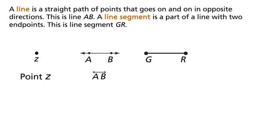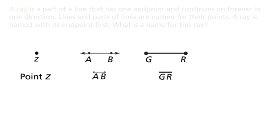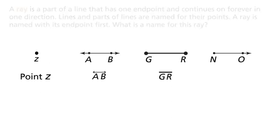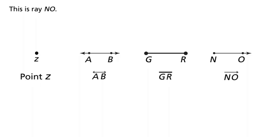A line segment is a part of a line with two endpoints. This is line segment GR. A ray is a part of a line that has one endpoint and continues on forever in one direction. Lines and parts of lines are named for their points. A ray is named with its endpoint first. This is ray NO.